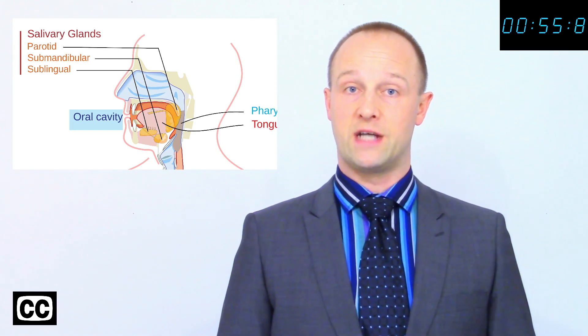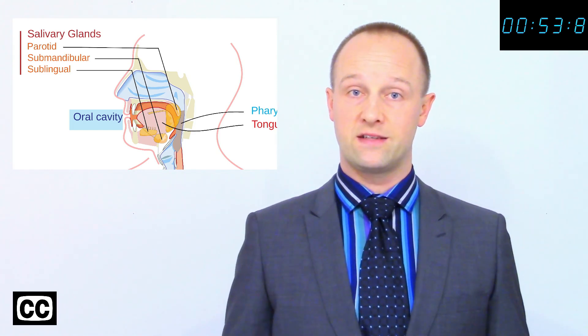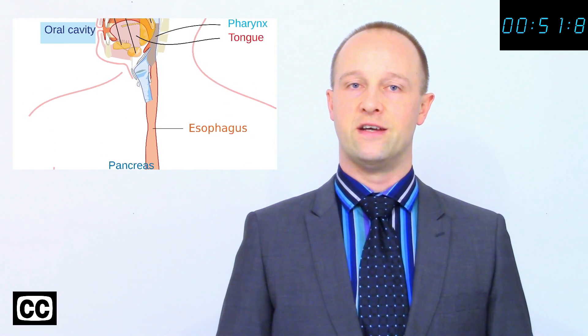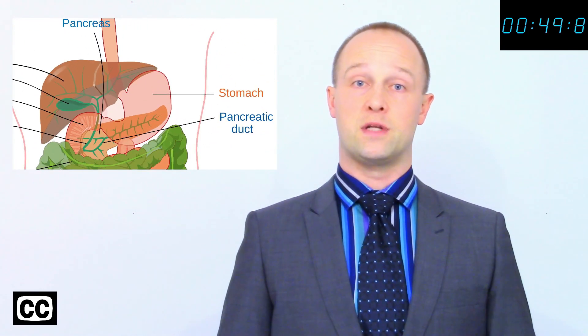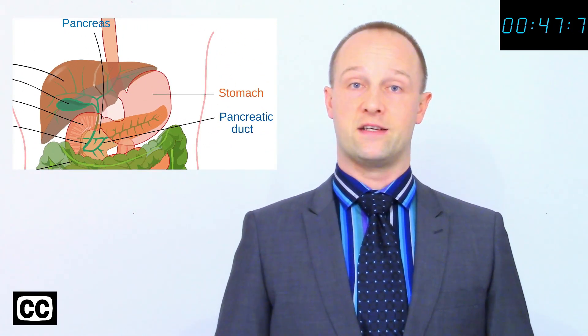We chew food in our mouth which is mechanical digestion plus enzymes from the salivary glands like amylase begin the chemical digestion. The food passes down the oesophagus helped along by peristalsis into the stomach acid.